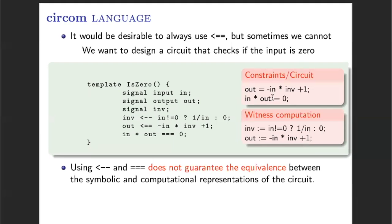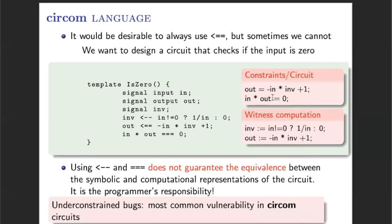As we have seen in this example, the CIRCOM compiler doesn't check if the two representations that we are generating are equivalent — it is the responsibility of the user. This way, one of the most typical bugs that may appear in CIRCOM programs is to not include all the necessary constraints in order to correctly model the statement, which is known as an under-constrained bug.